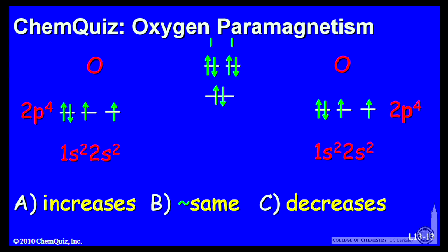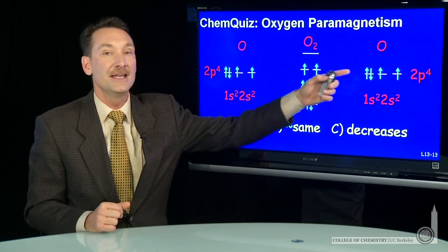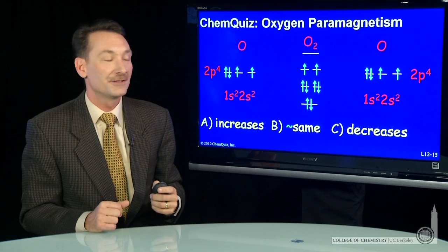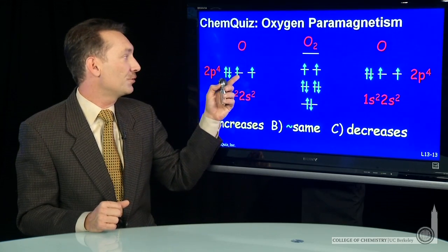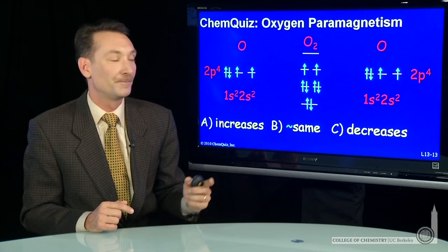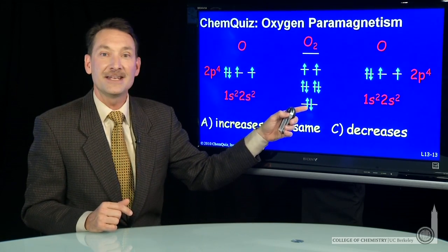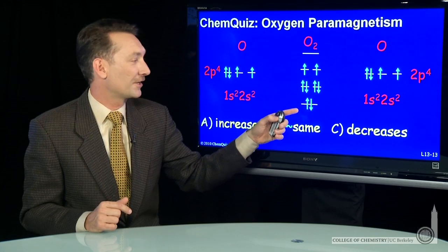When you form the oxygen molecule, you form molecular orbitals. And here are the molecular orbitals from these p atomic orbitals. And you fill them with 1, 2, 3, 4, 5, 6, 7, 8 p electrons.